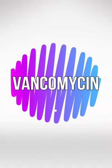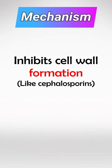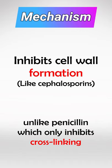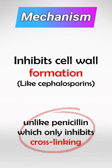Vancomycin in 60 seconds. It inhibits the formation of the cell wall, just like cephalosporins, and unlike penicillin which inhibits the cross-linking. So vancomycin and cephalosporins inhibit formation of the cell wall, while penicillin inhibits cross-linking of the cell wall.